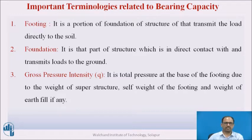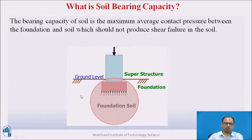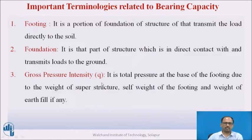Next, gross pressure intensity, denoted as Q. It is the total pressure at the base of the footing due to weight of the superstructure plus self weight of the footing and weight of earth fill, if any. To calculate gross pressure intensity, consider: weight of superstructure, self weight of the footing, and any overburden pressure — then divide the total by the area of the footing to get the gross pressure intensity.